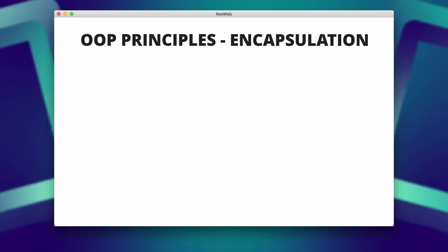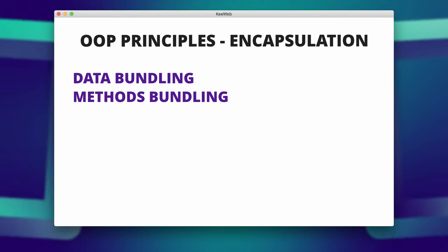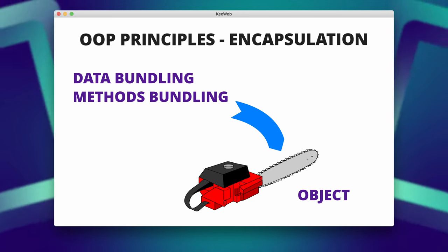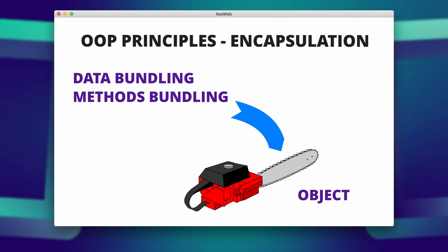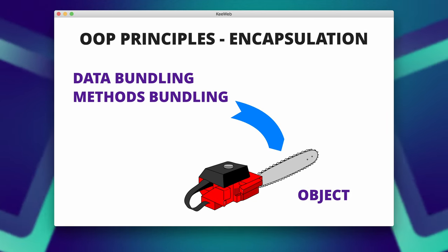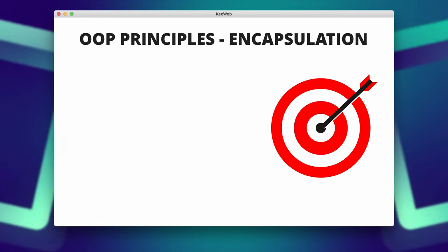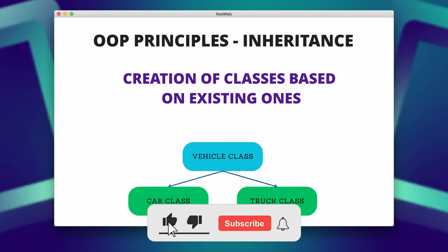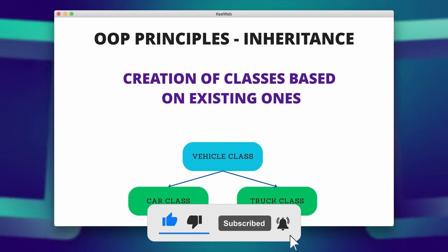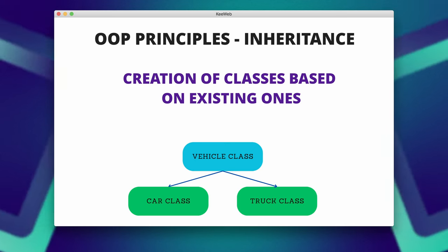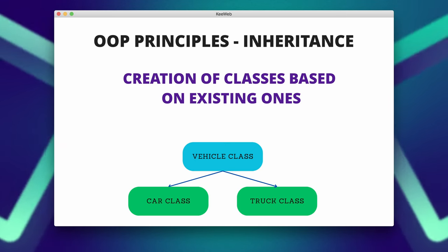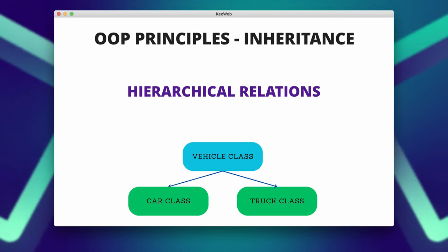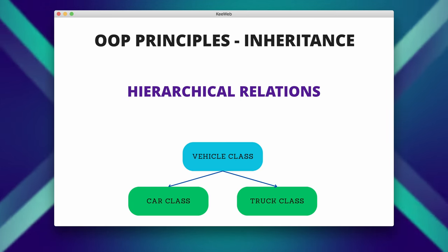Encapsulation refers to the bundling of data and methods together into a single unit called an object. It allows the object to control access to its internal state and ensures that the data is accessed and modified only through defined methods. Encapsulation helps in achieving data hiding, abstraction, and modularity. Inheritance allows the creation of new classes based on existing classes. The derived classes inherit the properties and behaviors of the parent class, which promotes code reuse and facilitates hierarchical relationships. Inheritance supports the concept of generalization and specialization.